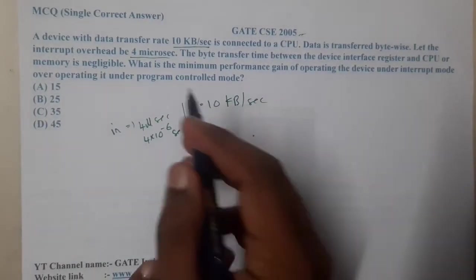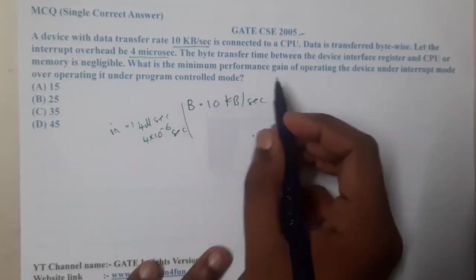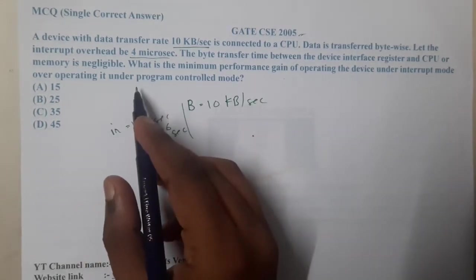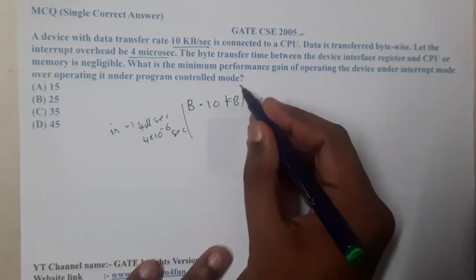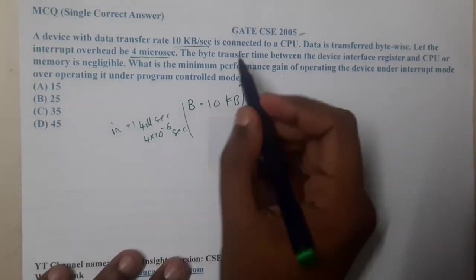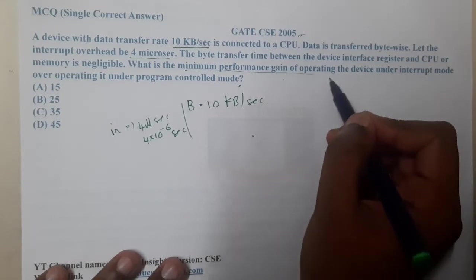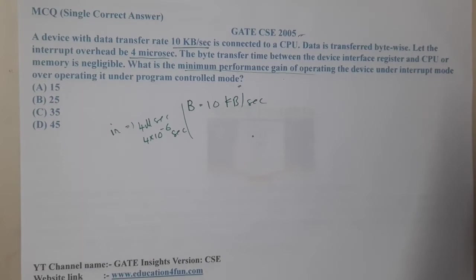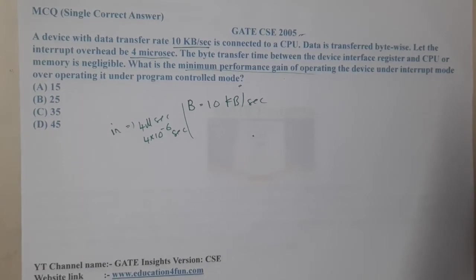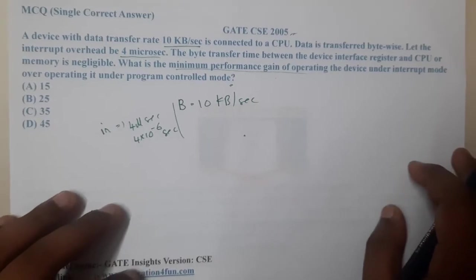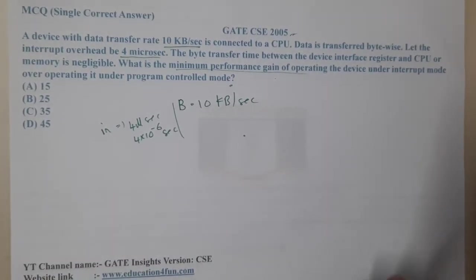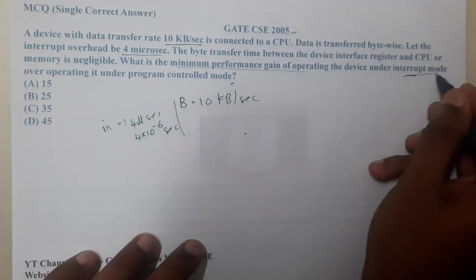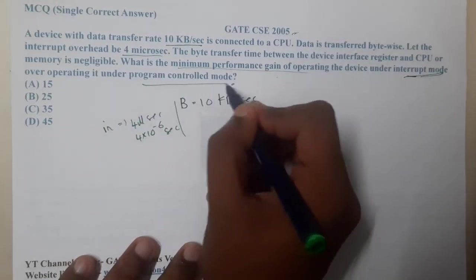The question asks: what is the minimum performance gain of operating the device under interrupt mode over operating it under programmable control (polling) mode? So we need to compare: when interrupts are enabled versus when the CPU is in program control mode.